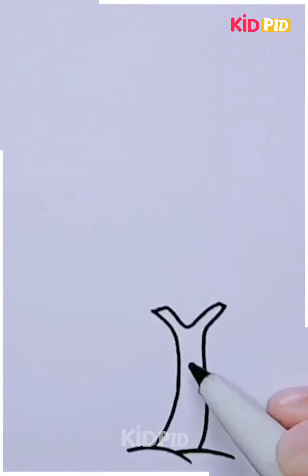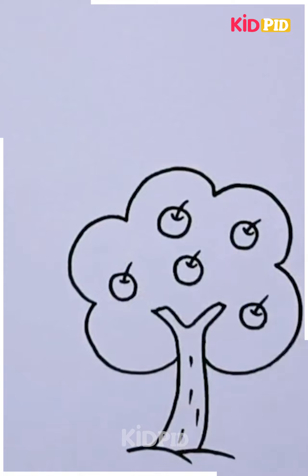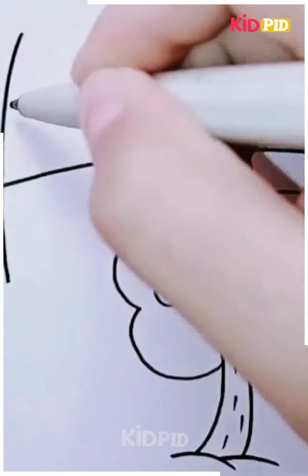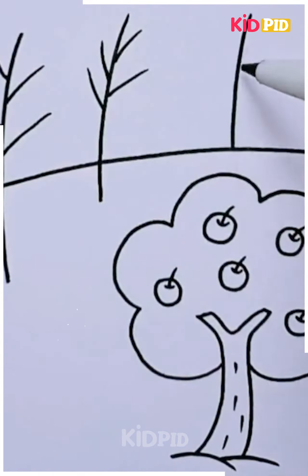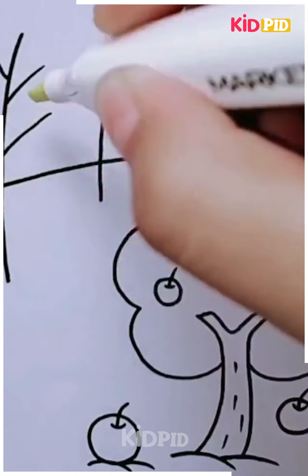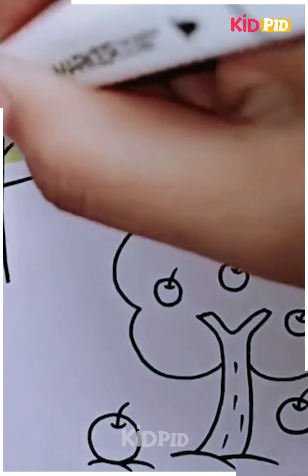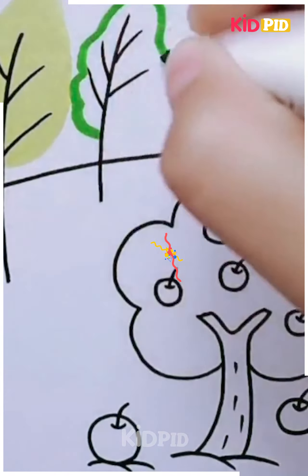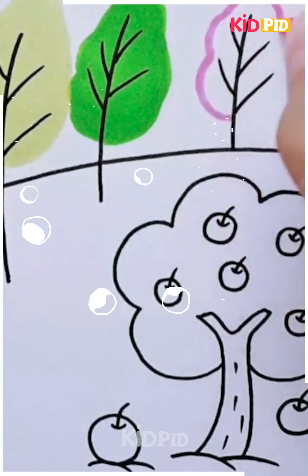I'm drawing a tree and then drawing apples inside the tree, so everyone can see it's an apple tree. One more set of leaves has been drawn like branches at the top, and then an apple is fallen down from the tree. The picture looks like that.